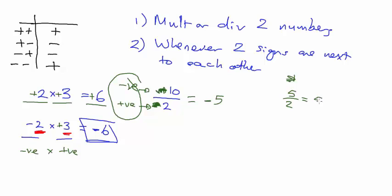Quick note: in GCSE you shouldn't really use the divide sign. You should use the fraction bar, because a fraction like five over ten is the same as five divided by ten.